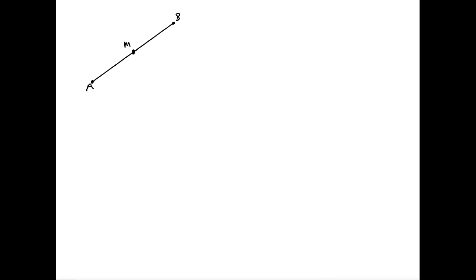Here we have a line segment AB and its midpoint is labeled M. We know that AM is equal to MB because the midpoint divides segment AB into two equal parts. We can also create a right triangle for segment AB treating AB as the hypotenuse, and we can do the same thing for AM and MB — making right triangles for each.